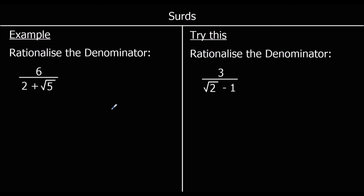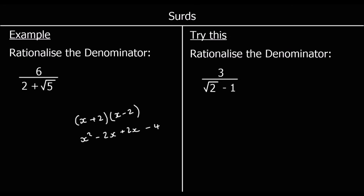If you remember, when we expand something like (x+2)(x−2) — double brackets with one plus and one minus — we get: x times x is x², x times −2 is −2x, 2 times x is 2x, and 2 times −2 is −4. When we collect like terms, the middle terms −2x plus 2x cancel out, so we're left with just x² minus 4. This is what we're going to use to get rid of the surd from the bottom.